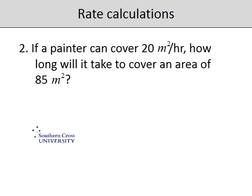So we need to find out how many - we know that each lot of 20 constitutes an hour, so we need to know how many 20s there are in 85. So that's a division, and 85 divided by 20 is going to turn out to be 4.25 hours, or 4 hours and 15 minutes.